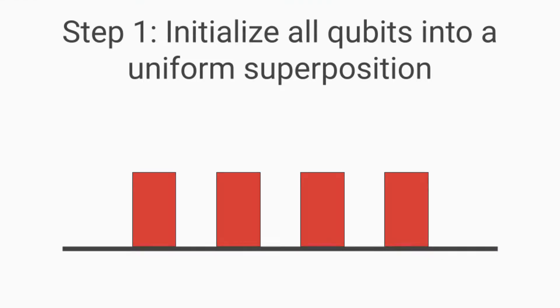First, in step one, we initialize all of the qubits into a superposition. In the picture below, we can see that, say, we have a list of size 4, and we first just set all of the probability of collapsing into each state as equal. You can see that all the bars are of equal height, which represents that they are all of equal probability of collapsing into when measured.